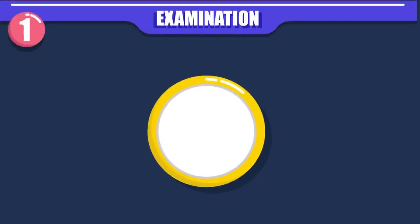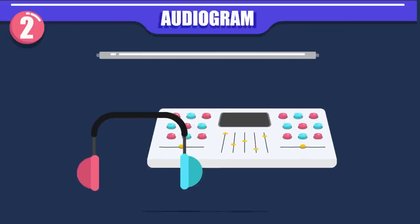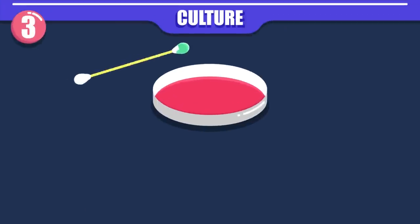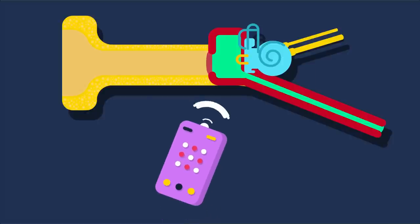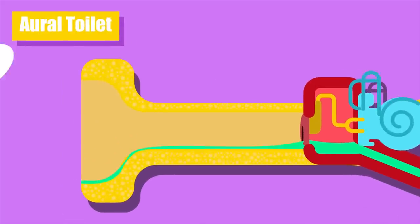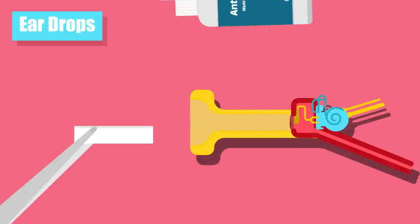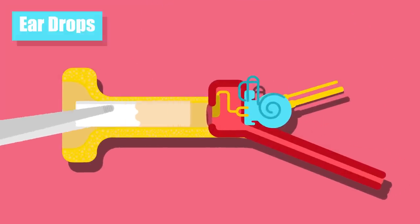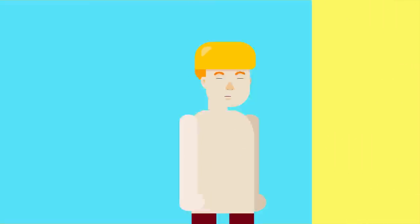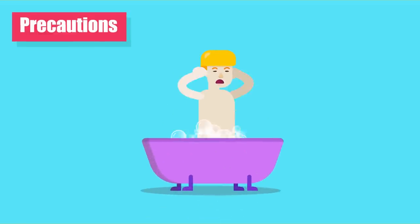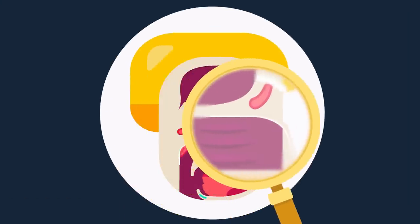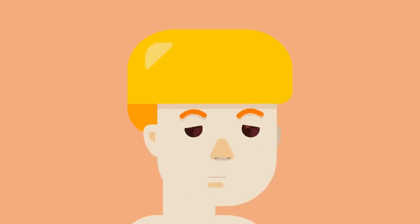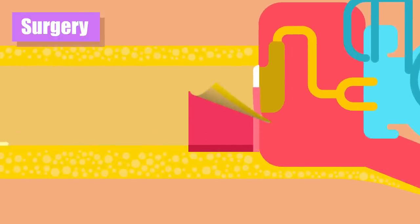Investigations: 1. Examination under microscope. 2. Audiogram — gives an assessment of degree and type of hearing loss. 3. Culture and sensitivity of ear discharge — helps select proper antibiotic eardrops. Treatment aims to control infection, eliminate ear discharge, and at a later stage correct hearing loss surgically. 1. Ear toilet — remove all discharge and debris. 2. Antibiotic eardrops combined with steroids for local anti-inflammatory effect. 3. Systemic antibiotics. 4. Patients are instructed to keep water out of the ear during bathing, swimming, and hair wash. 5. Treatment of contributory causes such as adenoids and nasal allergy. 6. Surgical treatment — once the ear is dry, myringoplasty can be done to restore hearing.